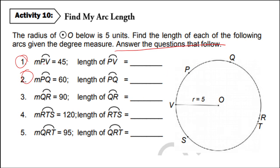So let's say that arc PV, so the degree measure of arc PV is 45. Now, the radius is 5. So what will be the measurement of the length of arc PV? So the measurement for the arc length of arc PV will be A over 360 is equal to arc length over 2 pi r.